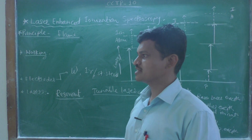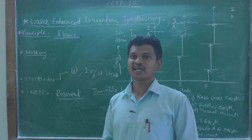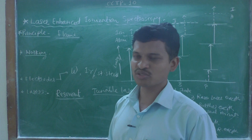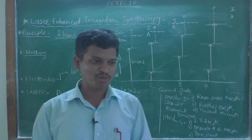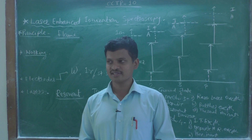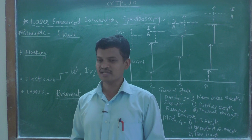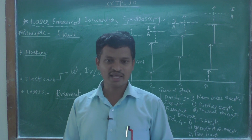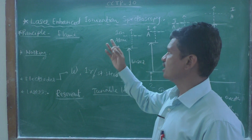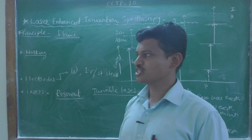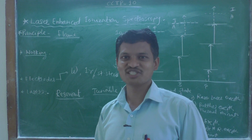Quantitative analysis in LEIS is done using either the standard addition technique or the calibration curve method. LEIS spectroscopy is very useful for ultra-trace analysis — just like RIS, it can measure analyte sample concentration at very low levels. This completes our discussion of Laser Enhanced Ionization Spectroscopy, which was part of the chapter on atomic fluorescence spectroscopy. Thanks for watching and have a nice day.